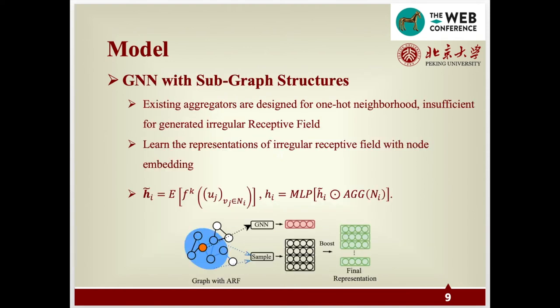Existing aggregators such as mean, max, and LSTM aggregates aggregate information in direct neighborhood. However, this aggregator is not suitable enough because the constructed receptive field is irregular. We call on the preliminaries. We have learned the node embedding for each node and a particular subgraph. As we prove in our paper, the node embedding U is G-equivalent, and we are able to learn the representations of this irregular receptive field with the help of node embedding.